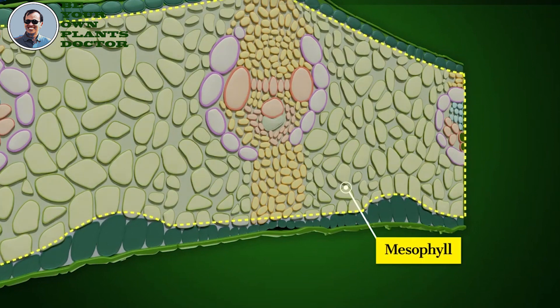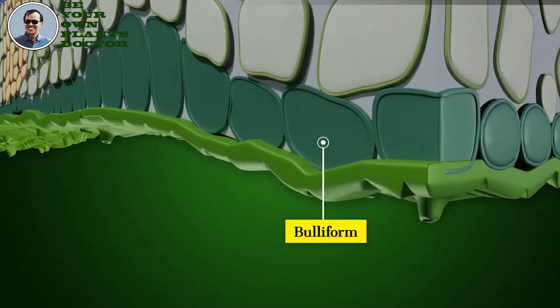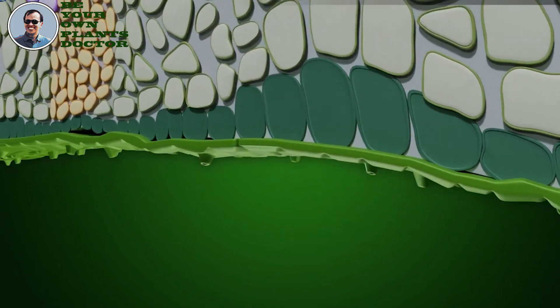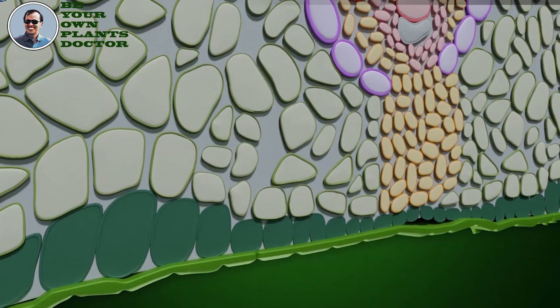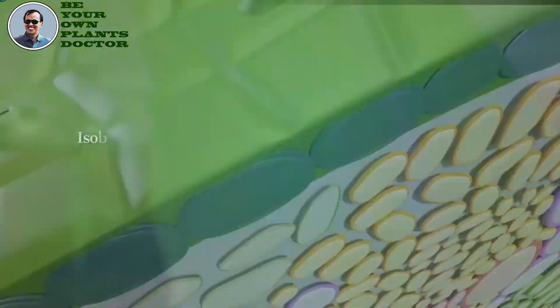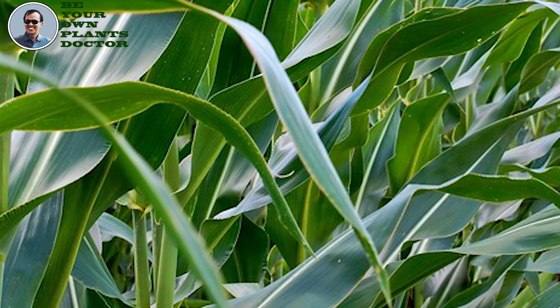Struktur ini berperan penting dalam respon tanaman menanggapi defisit air pada sel-sel daun. Jika tanaman mengalami kekeringan, sel-sel kipas akan mengerut, menutup lubang stomata, dan membuat daun melipat ke bawah, sehingga mengurangi transpirasi. Sehingga tanaman jagung relatif lebih tahan terhadap kekeringan.